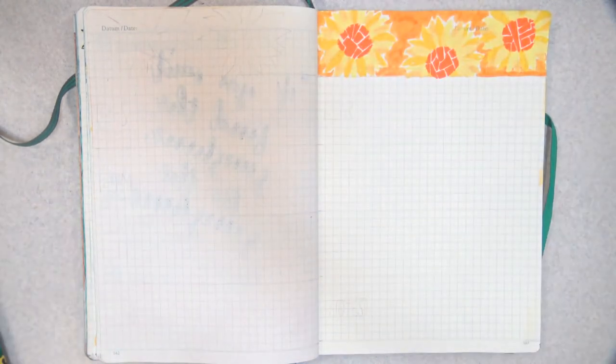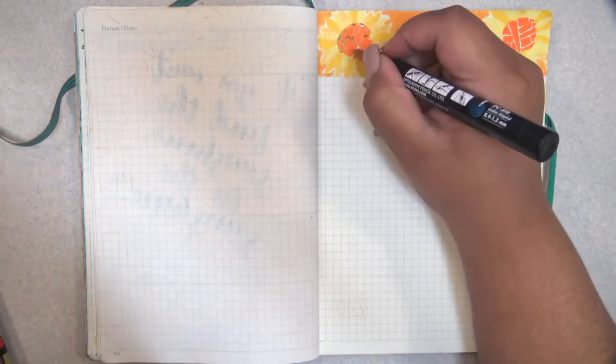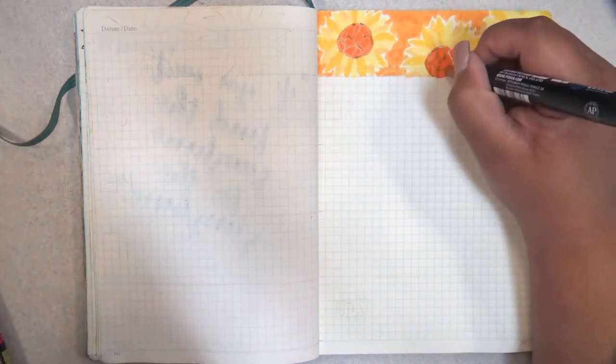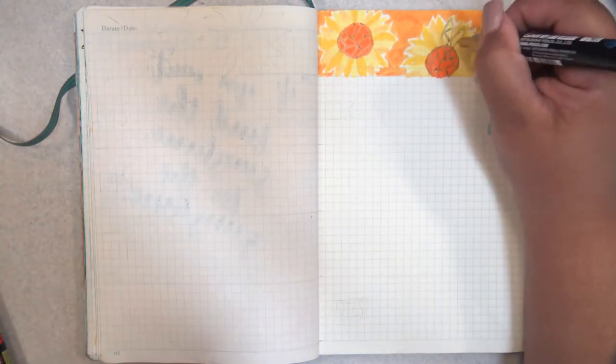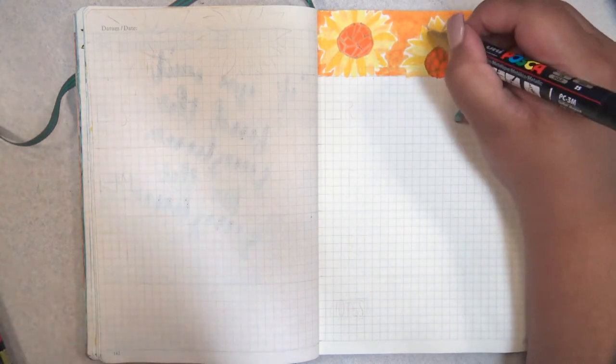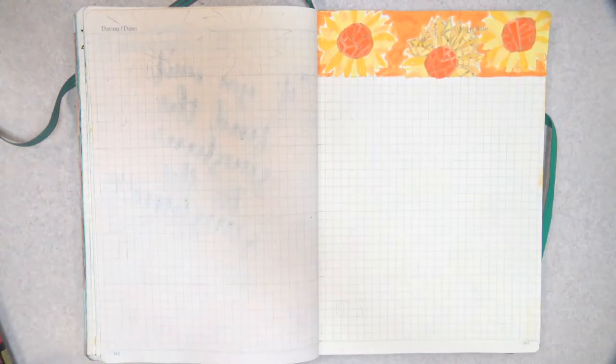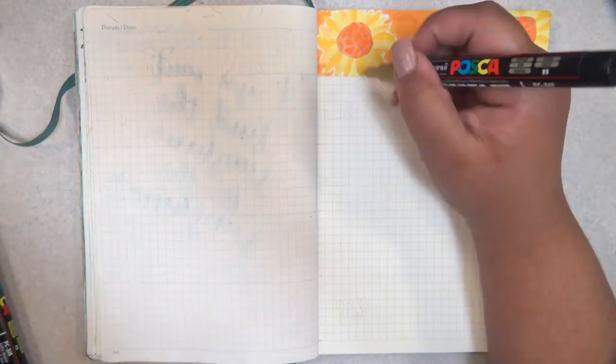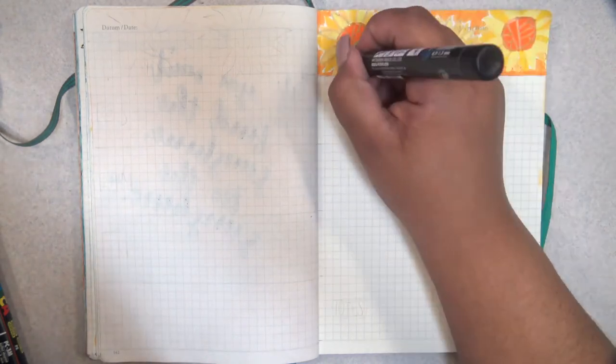After I blocked in the basic shapes with my Posca markers and Crayola Super Tips in varying shades of yellow, I went in with my gold and silver Uni Posca pens to split up the fields into geometric shapes to look like a mosaic or maybe a stained glass window around the sunflowers.